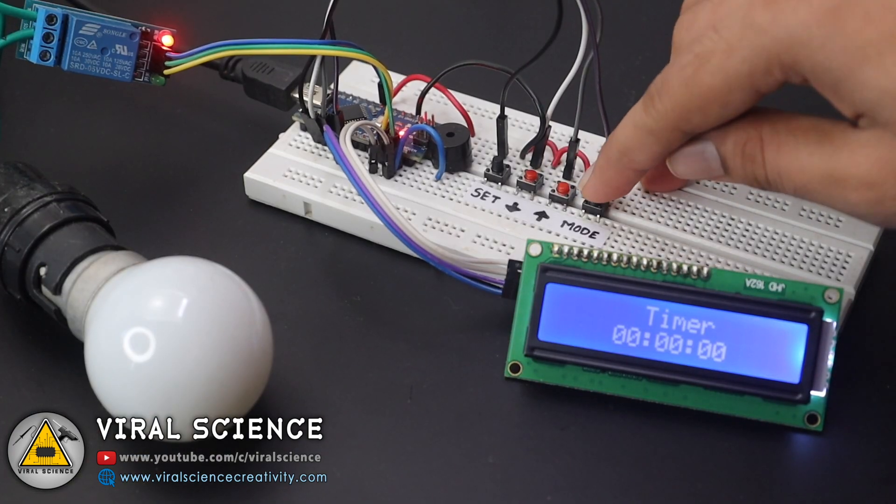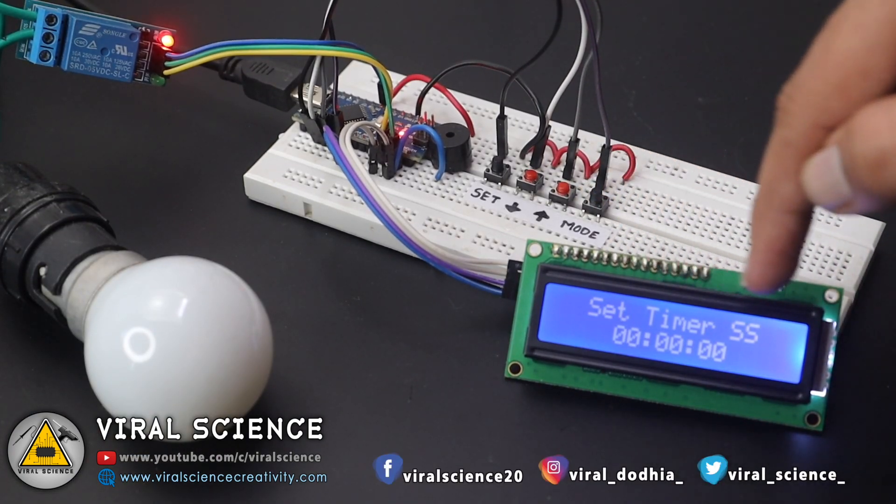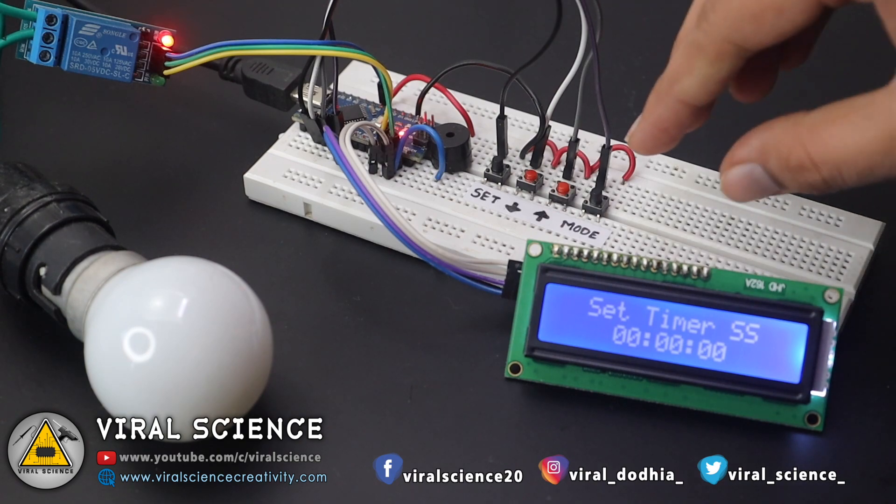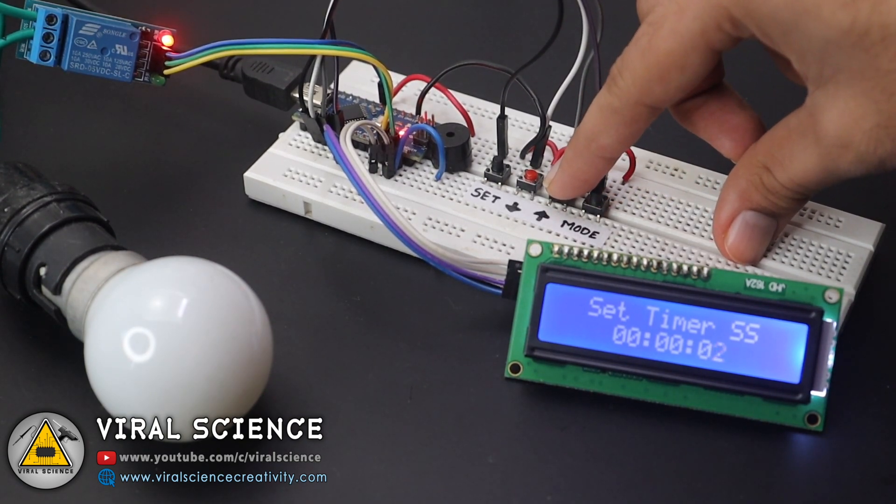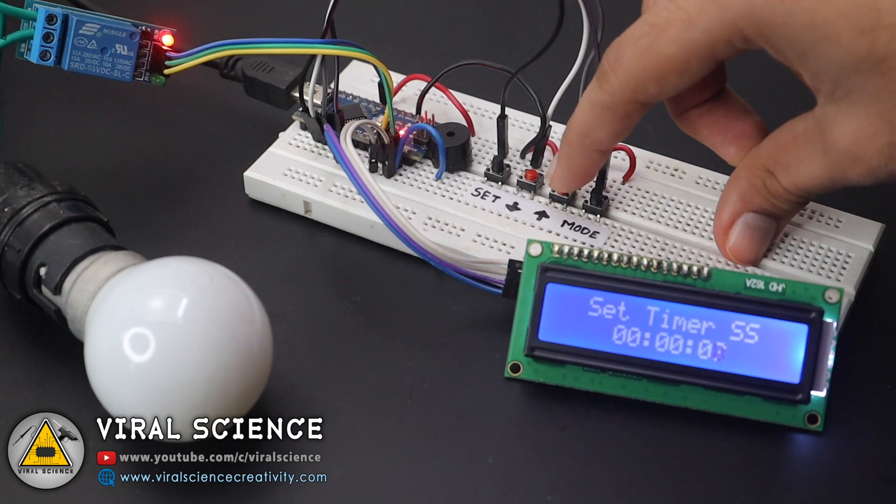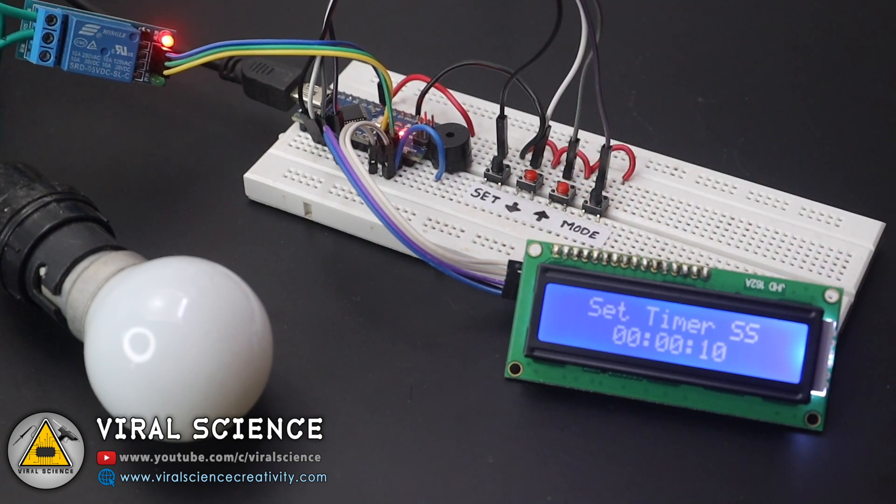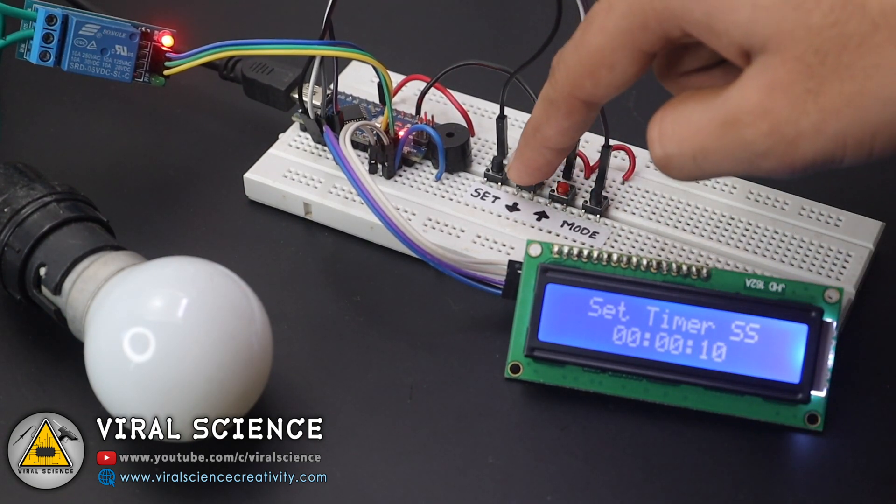While pressing the mode button, you can set the seconds, minutes, and hours. You can use up and down arrow keys to select the digits. And when you press the set button, the current value will be stored and it will start working.